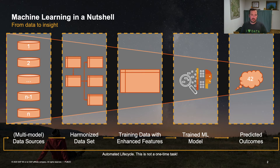And if you're dealing with multi-model data — whether it's graph data, spatial data, or semi-structured documents — that process can get complex, and it may incorporate spatial data handling.